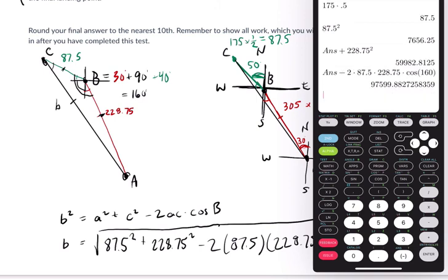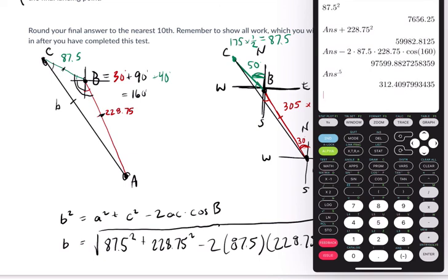87.5 squared plus 228.75 squared minus 2 times 87.5 times 228.75 times the cosine of 160. Let's go to mode, make sure we're in degrees. We are. Now, don't fret. 98,000 would not make sense. That's b squared. We want to take the square root, so I do the power of 0.5. That feels a little bit better. 312.409. And since this is asking us to round to the nearest tenth, I'll say b equals 312.4.